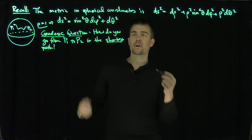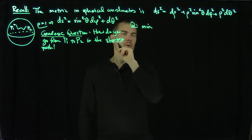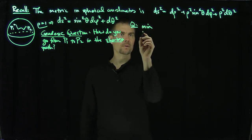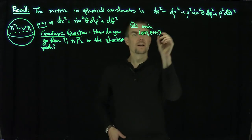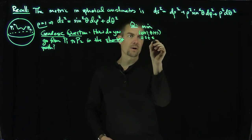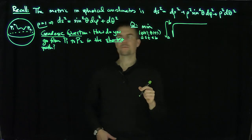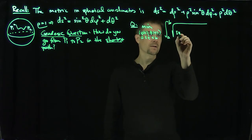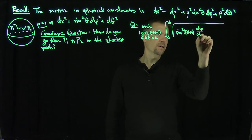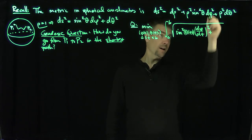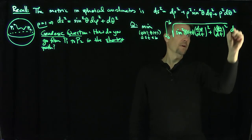Our question is to find the minimum over all paths from P1 to P2 — that is, over all φ(t), θ(t) curves. The arc length integral from t = a to b gives us a curve between two points: the integral from a to b of the square root of sin²(θ(t)) (dφ/dt)² + (dθ/dt)² dt. I'd like to minimize this.